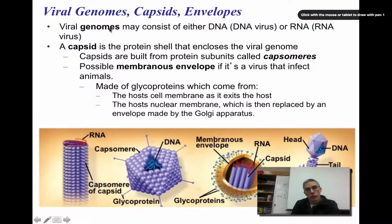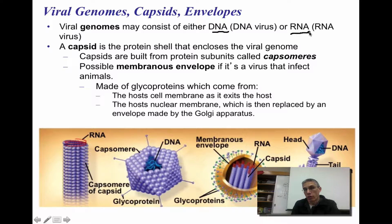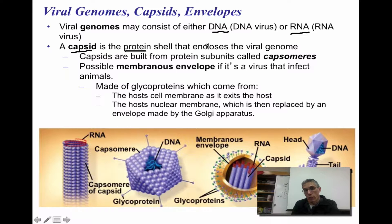The structure of a virus is actually relatively simple. When you look at the genome or the genetic material of a virus, it's either going to have DNA or it's going to have RNA. So we classify them as DNA viruses or RNA viruses. The outside coat of a virus is going to be called a capsid, and it's going to be constructed by using various proteins. This is the part of the virus that will enclose the genome or genetic material. The capsids are built from protein subunits, and we call those proteins capsomers. Sometimes viruses that infect animals will have a membranous envelope.